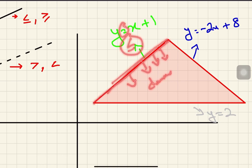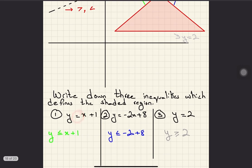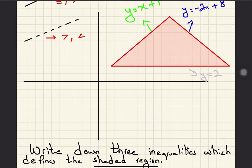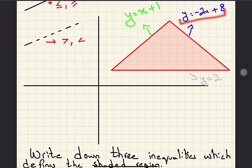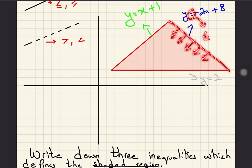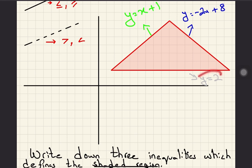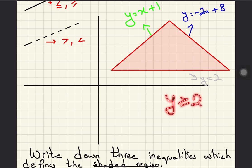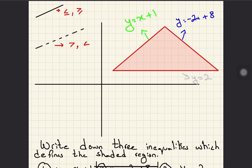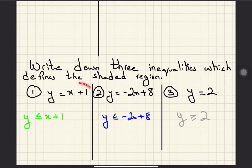For the second line, y equals to minus 2x plus 8: again it is a solid line and the shaded region is below it, so we write y less than or equal to minus 2x plus 8. For the third line, y equals to 2: the shaded region is above this line, so we write y greater than or equal to 2, because the region is upward and the line is solid.